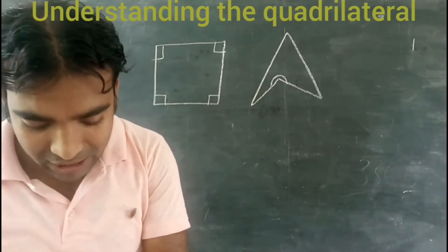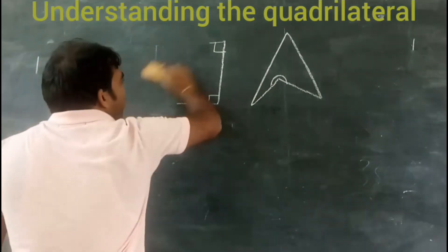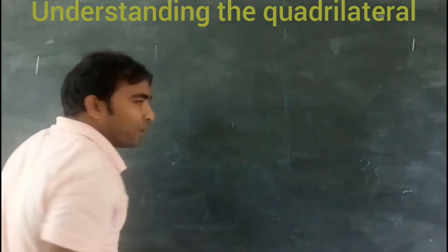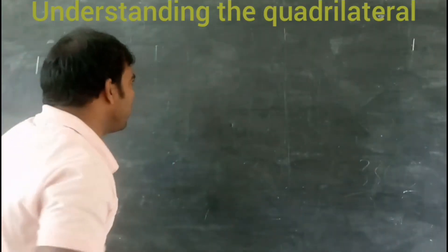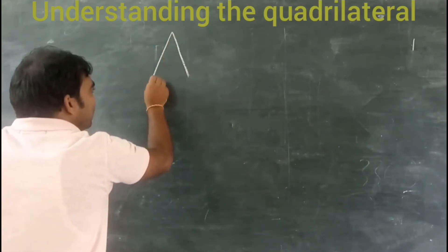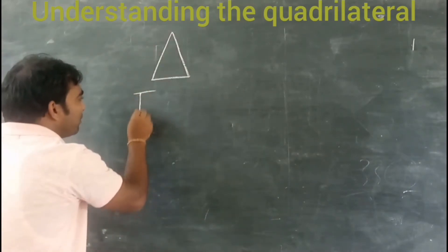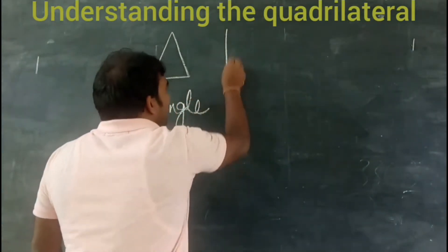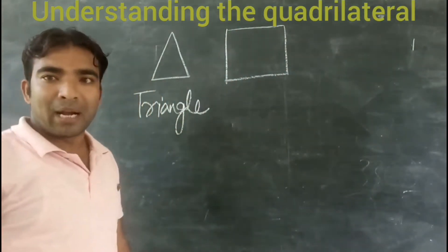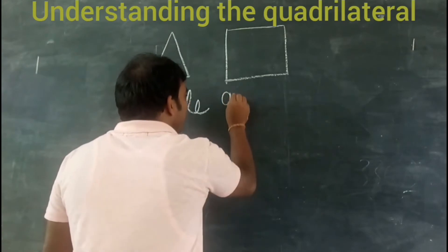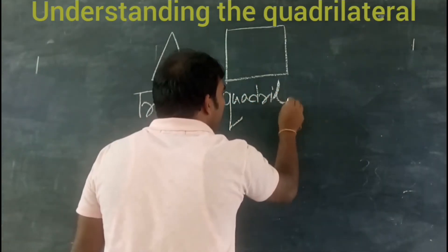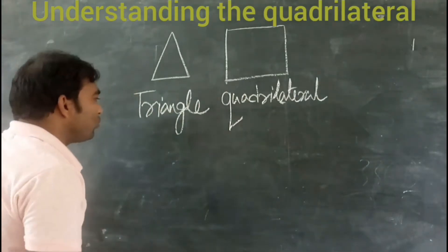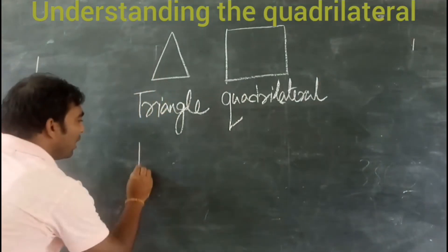Now we will discuss the classification of the polygon on the basis of the number of sides. When a polygon is made up of three sides, it is known as a triangle. When a polygon is made up of four sides, whether it is a square, parallelogram, or rectangle, they are known as quadrilaterals.